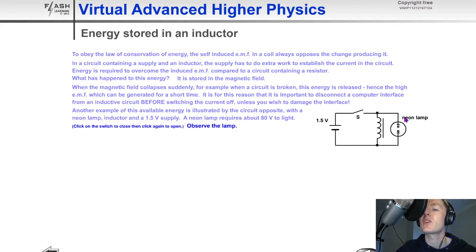So if you have a look at this basic inductive circuit, we've got a switch, a 1.5 volt battery, an inductor with an iron core, and a neon lamp. And the inductor and the neon lamp are in parallel.